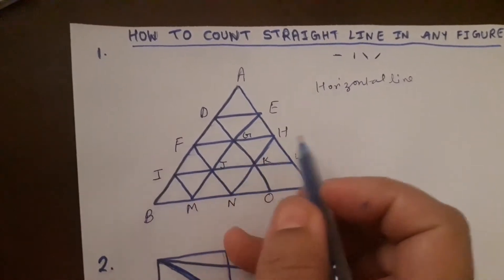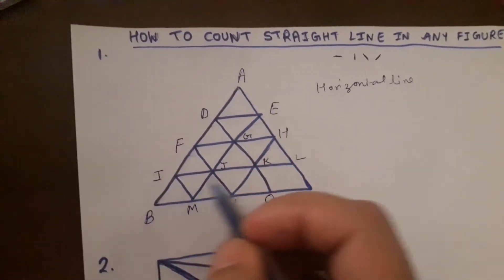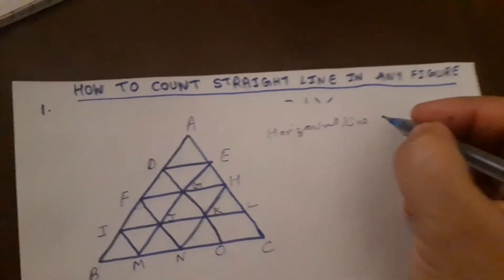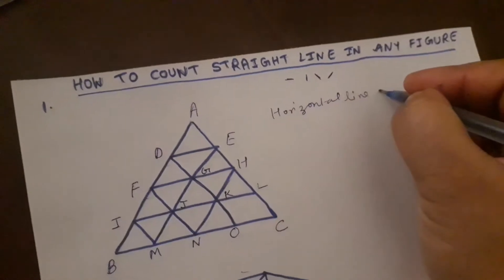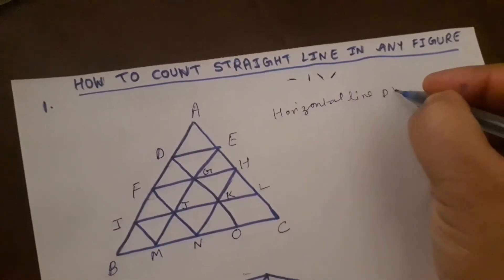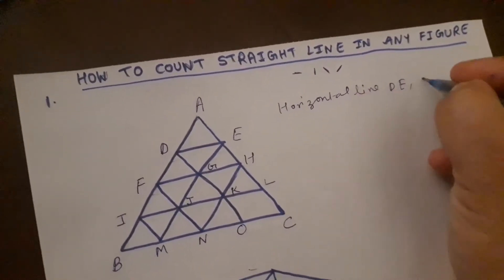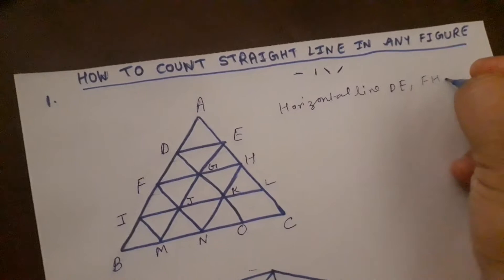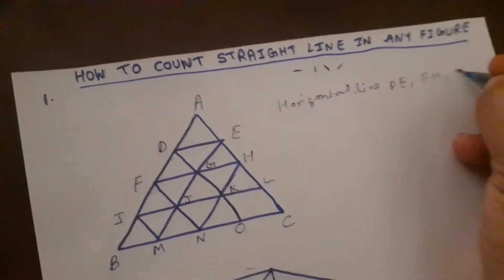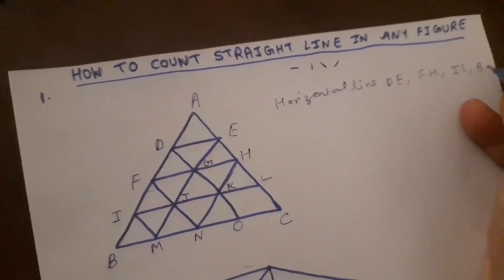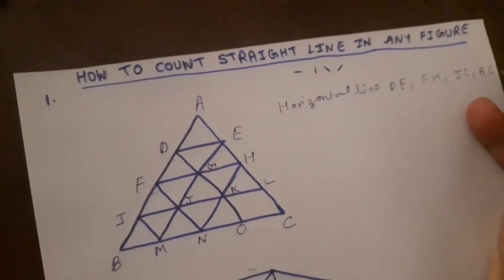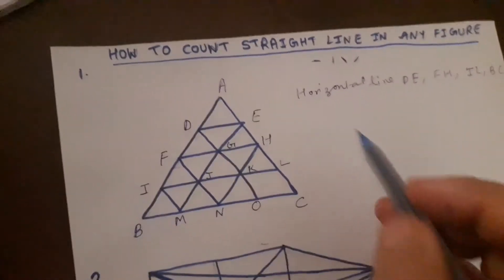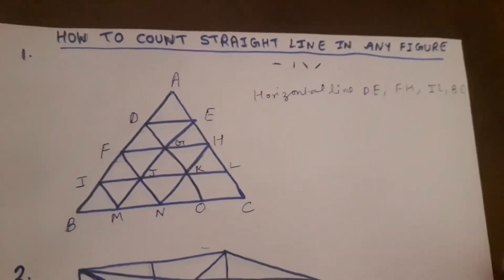You can see the horizontal lines in this figure. Their names are D, E, F, H, I, L, and B, C. So there are 4 horizontal lines in this figure.